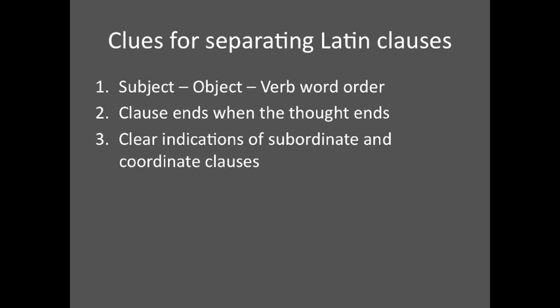Latin has several clues to help readers separate its clauses. After all, Cicero's audience needed to understand his speech without looking at a script with punctuation. These clues are: 1. A relatively standard subject-object-verb word order, so a verb is often a clue that a clause is ending. 2. That a clause ends where the thought or idea ends. 3. Clear indications of subordinate and coordinate clauses.